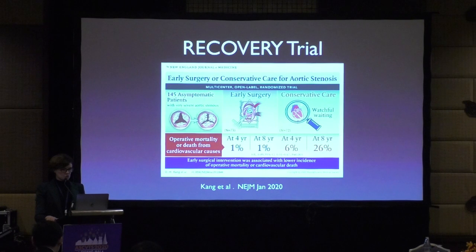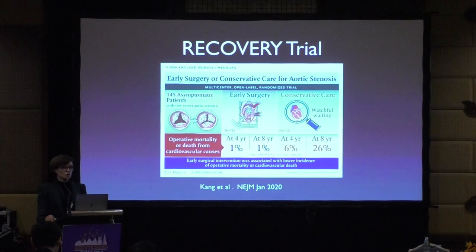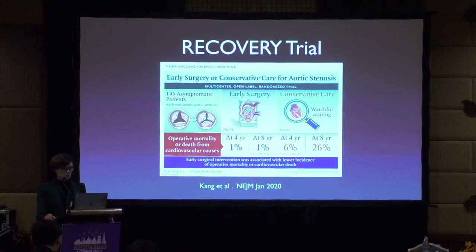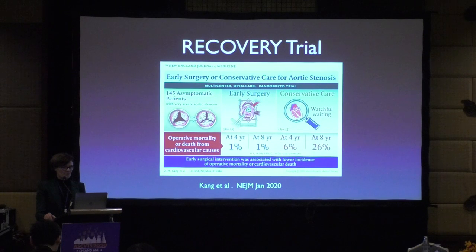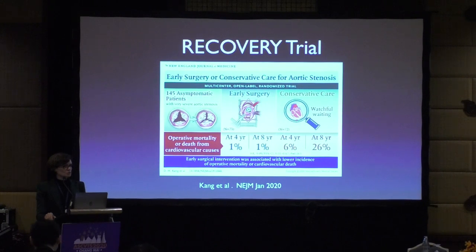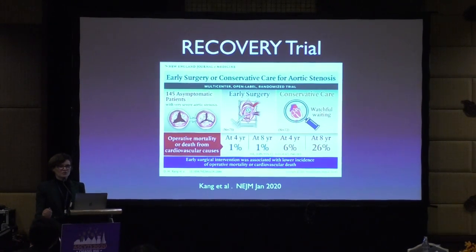At 5.5 m/s, hardly any patients escaped intervention or bad outcome by three years. The RECOVERY trial — a prospective randomized study by Kang et al. published in the New England Journal of Medicine in January — randomized 145 patients with very severe AS (mean gradient ≥50 mmHg, peak velocity 4.5 m/s, aortic valve area 0.75 cm²) into early surgery versus watchful waiting. The average age was in the 60s and about two-thirds had bicuspid aortic valves. This trial may impact future guidelines.